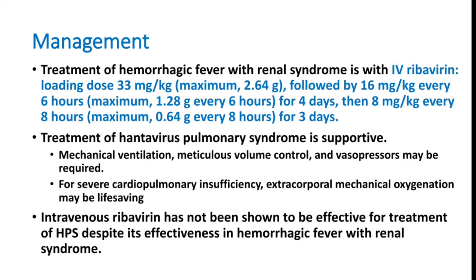For hantavirus pulmonary syndrome, we provide ventilatory support. We can use BiPAP or mechanical ventilation with high PEEP. One important consideration is the high chance of hemorrhagic transformation in the lung infiltrates, and mortality rates are very high. Many patients may require vasopressors for hypotension. We can treat initially with fluids, but some patients can develop ARDS and then fluid treatment must be reduced, and vasopressors started. Ribavirin is not very effective in lung infiltrates but is very effective in renal syndromes.